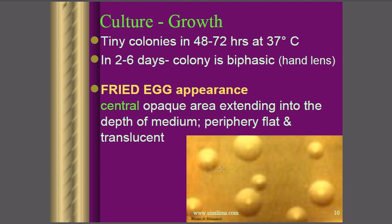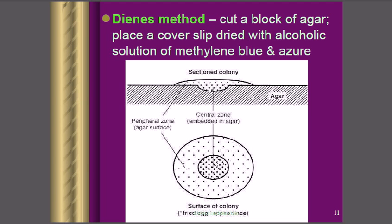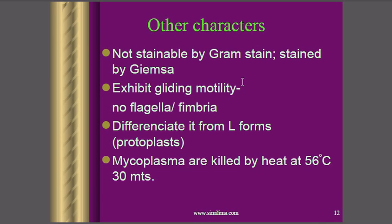The central region of the fried egg appearance colonies is opaque, while the area extending into the depth of the medium and the periphery is flat and translucent. In the schematic presentation, the central zone is slightly embedded into the agar, and the periphery is flat and translucent. Mycoplasma are not good at holding gram stain because they lack cell wall components, so they must be stained with Giemsa stain instead.